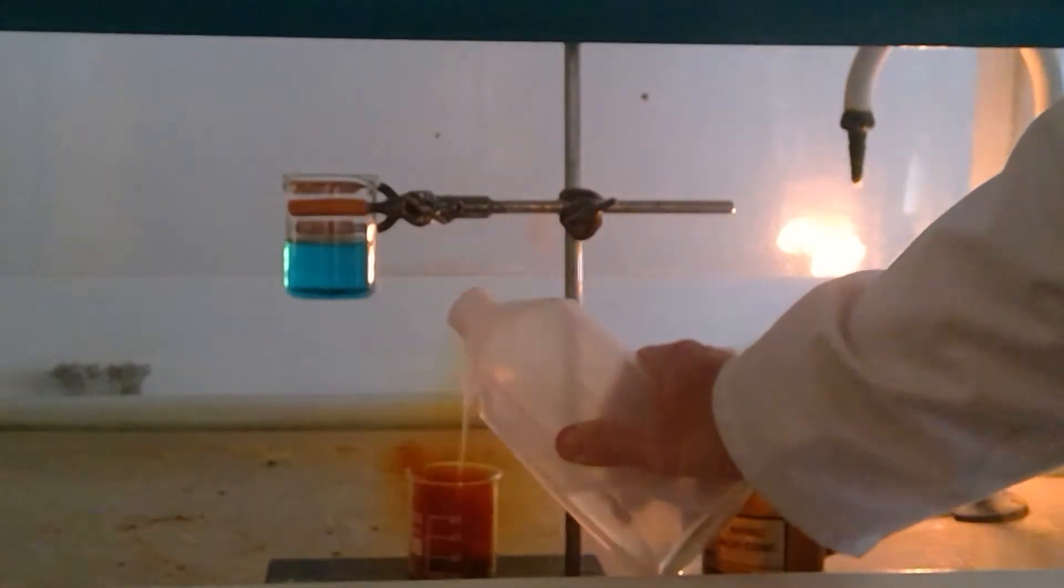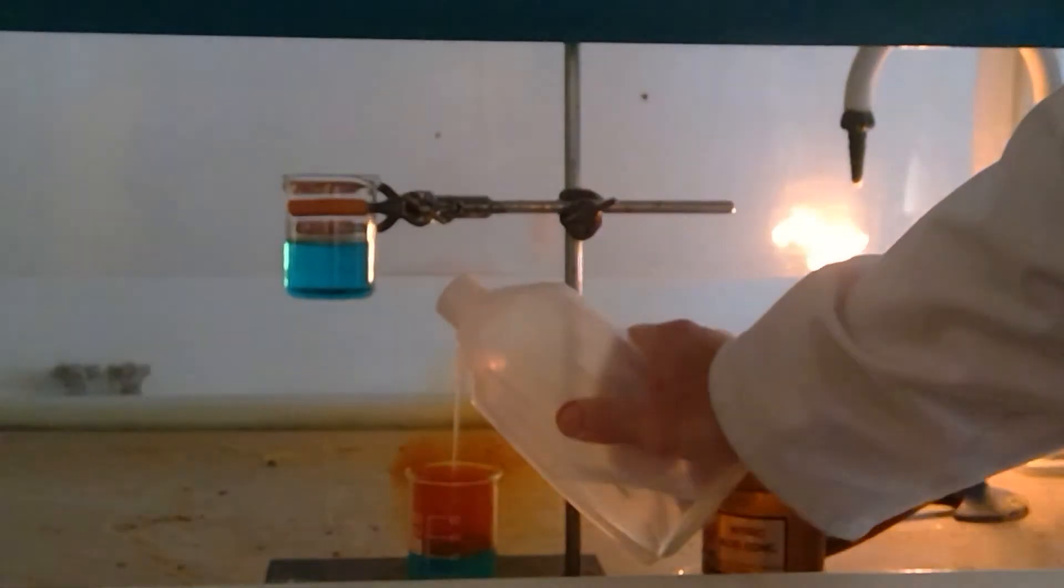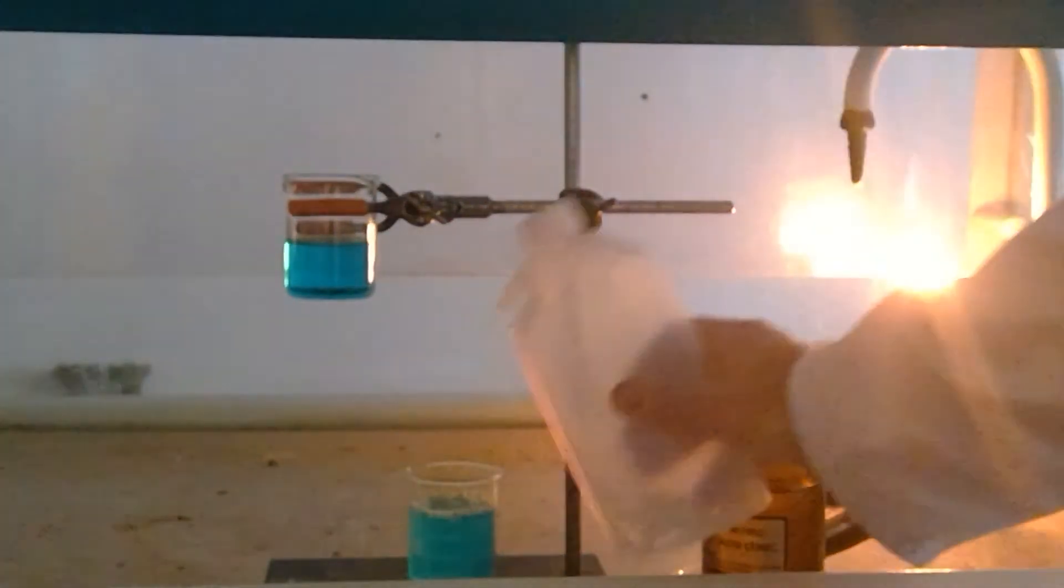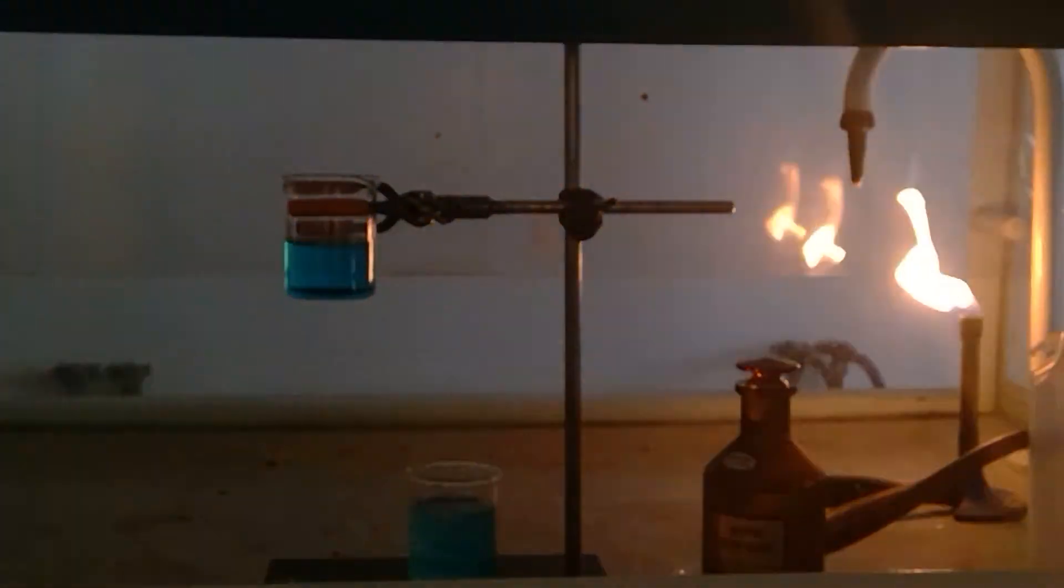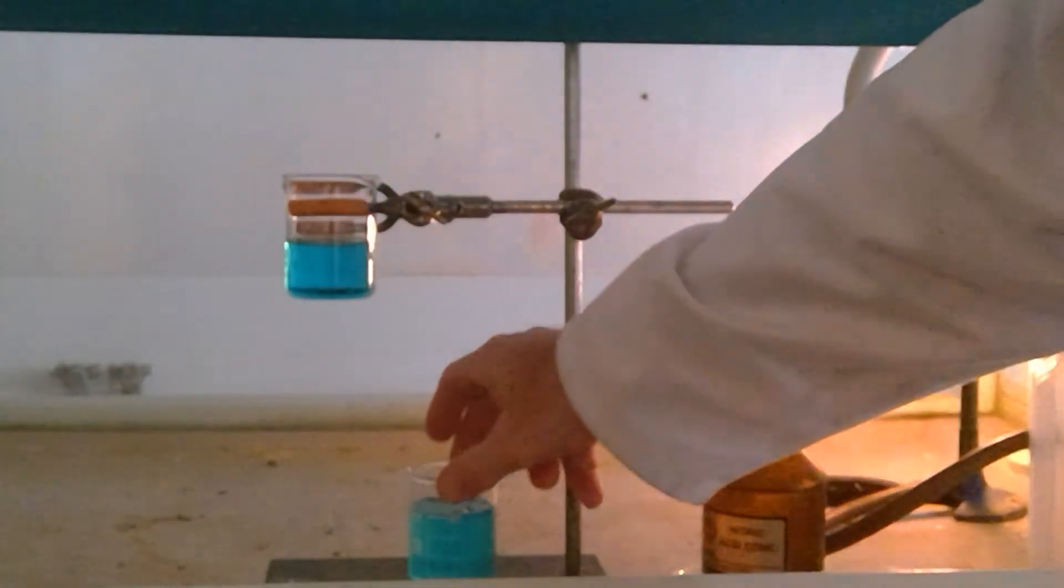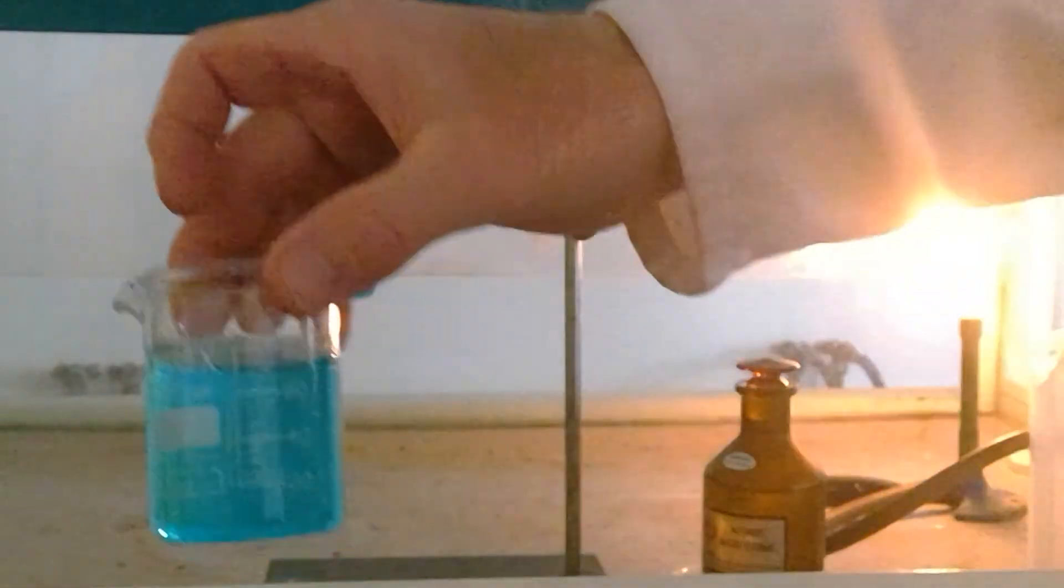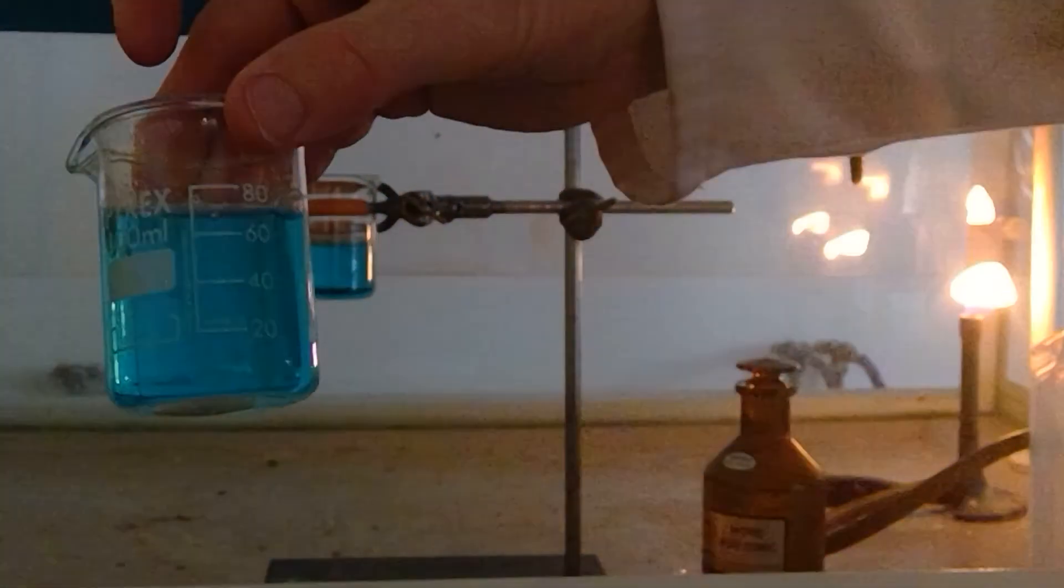And then to slow the reaction I will dilute down the combination and you can see again you have the blue color of the copper nitrate solution and the coin has in part disappeared.